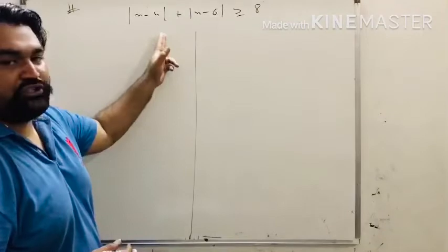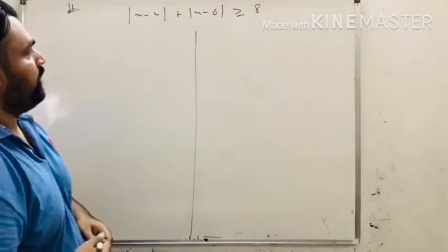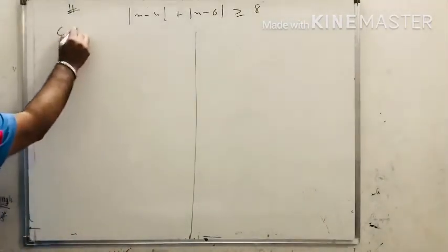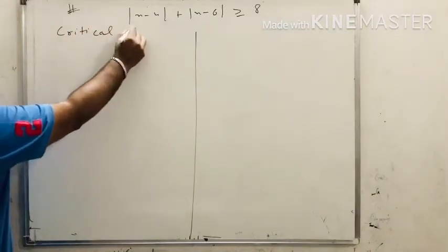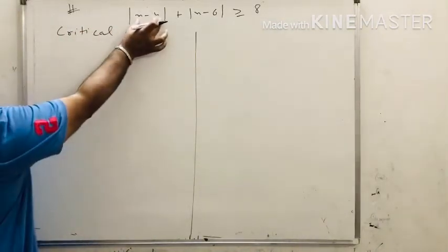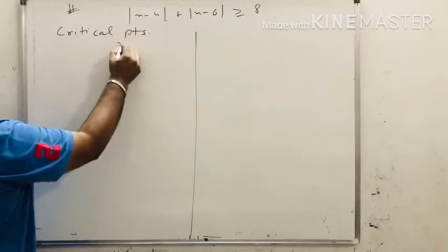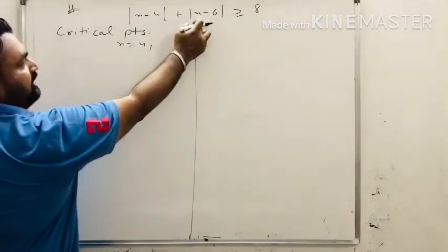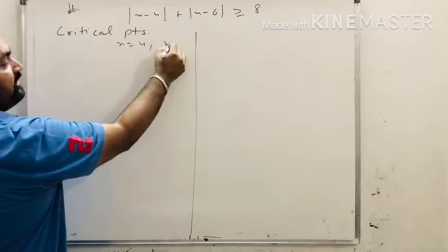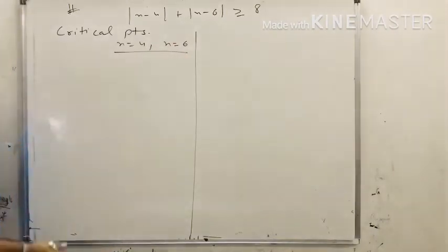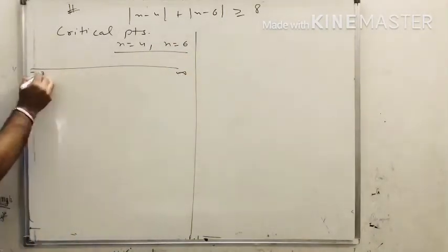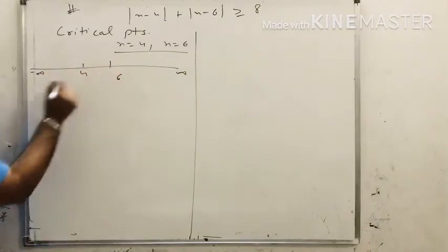The next question follows the same approach. First find the critical points: setting x minus 4 equals 0 gives x equals 4; setting x minus 6 equals 0 gives x equals 6. The critical points are 4 and 6. Draw a number line with 4 and 6 marked.